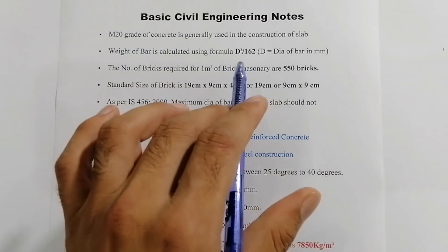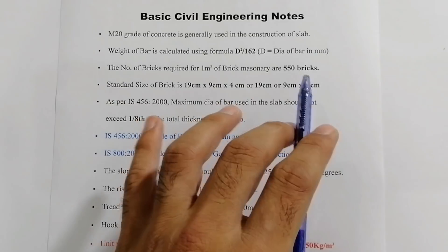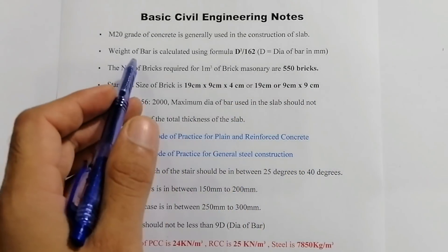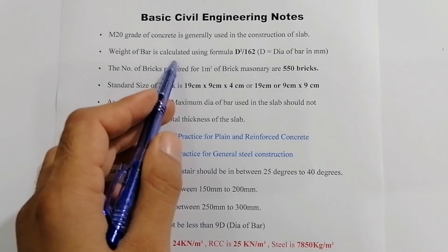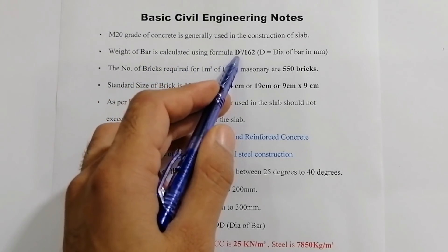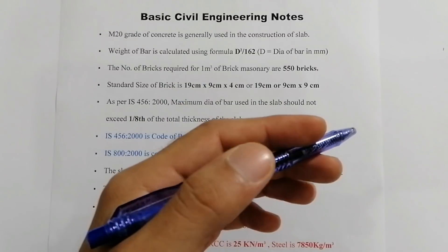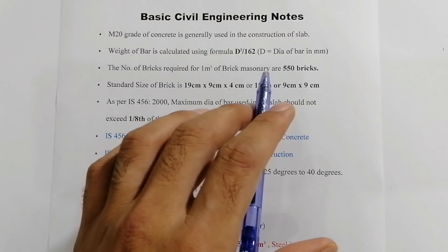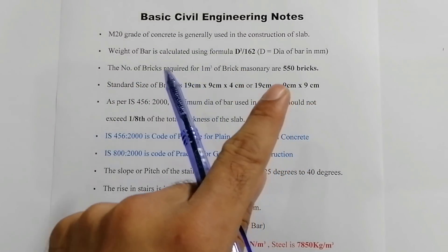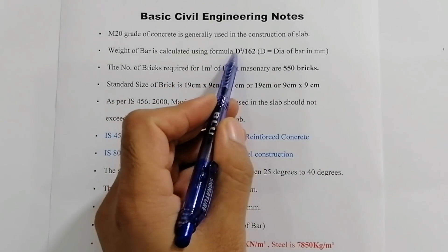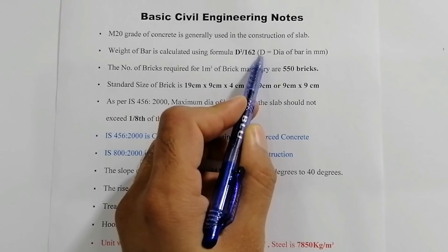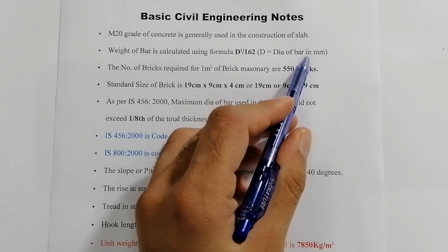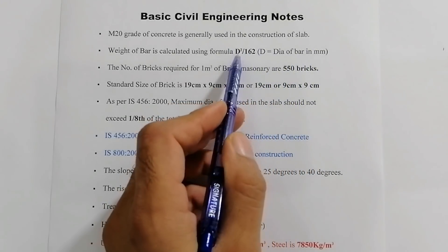The second one is weight of bar. Weight of steel bar is calculated using formula D²/162. You can find the weight of steel per meter, weight of steel for one meter: D²/162, where D is diameter of steel bar in millimeters. With this formula you can find weight of steel bar per meter, kg per meter.